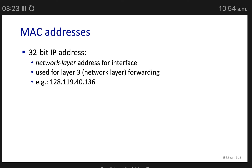IP version 4 uses a 32-bit address used for network layer forwarding, for example 128.119.40.136. When you type facebook.com, DNS resolves the domain name to this IP address — that's the function of DNS, because people can't remember 32-bit IP addresses. It's much easier to remember bbc.com than a numeric address.